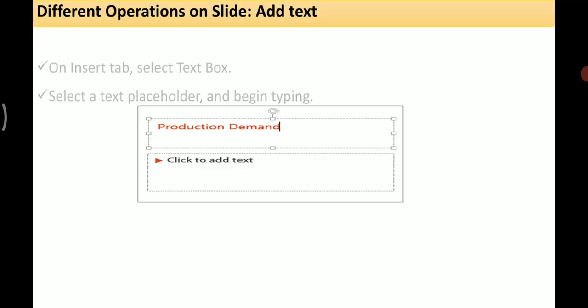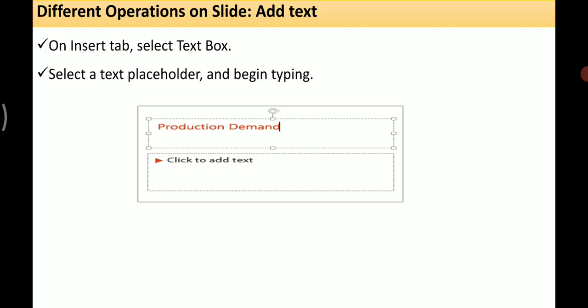Those were the different views of slide. Next we'll see the different operations on the slide. The first is to add text. To add text, select the Insert tab and then select the Text Box. Place the text box on your slide and then begin typing. In the image you can see a text box has been dragged and placed as a text placeholder, with sample text such as 'production demand' typed in.